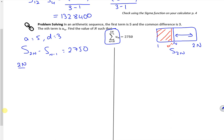So 2n over 2, 2 lots of 5 plus 2n minus 1 lots of 3, minus n minus 1 over 2, 2 lots of 5 plus n minus 2 lots of 3, equals 2750.